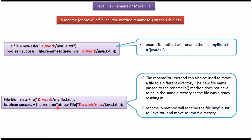Using the renameTo() method we can rename the file and also we can move the renamed file to a different directory. In this example, myfile.txt is renamed to java.txt and moved under the miscellaneous folder.